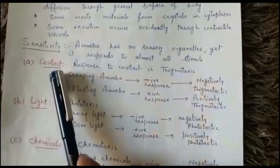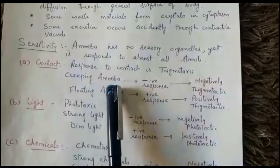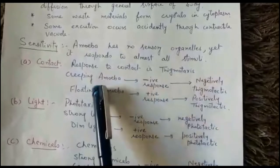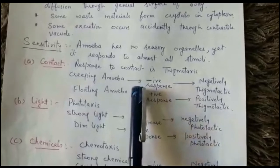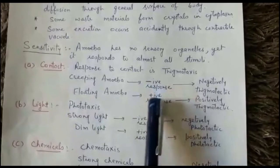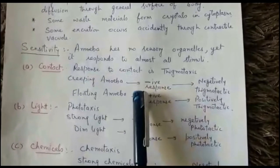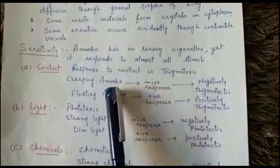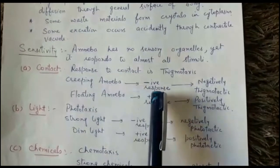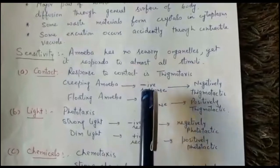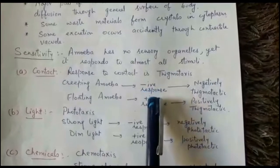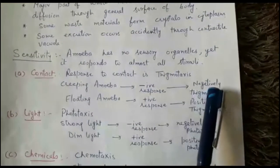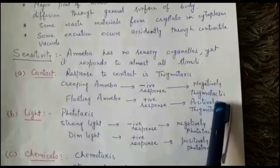A creeping amoeba, when it comes in contact with any obstacle, shows a negative response — it stops for a while and then starts creeping in a new direction. It tries to avoid that obstacle. So we say it is negatively thigmotactic.